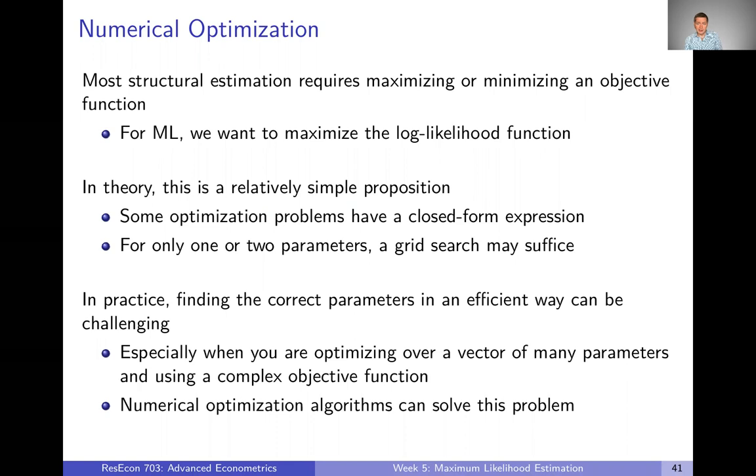But as things get more complicated, we might not have real closed form expressions. In that case, if you only have one or two parameters, sometimes just a simple grid search will suffice. You can just try tons of parameter values and see which one maximizes the log likelihood function. If computation is fast and you only have one or two parameters, that's certainly doable.